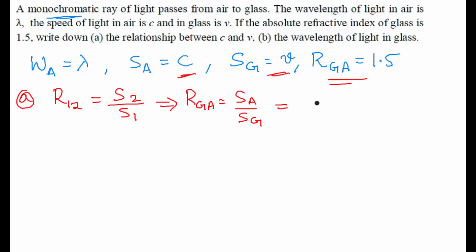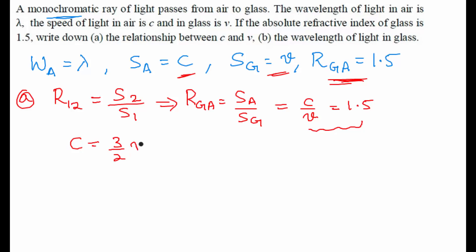Substituting these values: c divided by the speed in glass, which is v, equals n_ga which is 1.5. From this we get c equals 3/2 times v. Let's take this as equation 1.